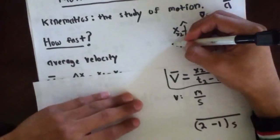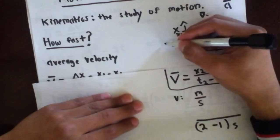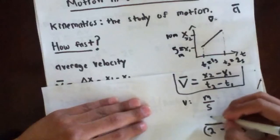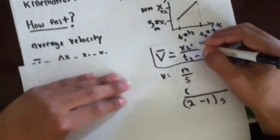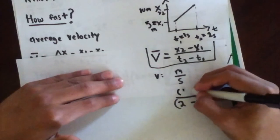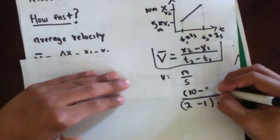Now, for our position, let's say I said x1 was equal to five meters, and x2 was equal to ten meters. So if we were to plug this into our equation, we would see that the final position was ten meters, and the initial position was five meters.